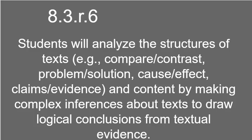We're going to be discussing standard 8.3.R.6 for the state of Oklahoma — that's 8th grade, the third standard for reading, point 6. The language of this standard reads: Students will analyze the structures of text, for example, compare and contrast, problem solution, cause effect, claims of evidence, and content by making complex inferences about text to draw logical conclusions from textual evidence. That's big. Let's break it down.